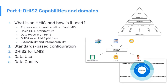In Part One, DHIS2 Capabilities and Domains, we'll start by explaining what a health management information system is and how it's used — its purpose, characteristics, and basic architecture. We'll also look at the data types involved, building on what you may have learned in the Introduction to DHIS2 course. We'll discuss how the DHIS2 software platform can be extended within and beyond the health system, cover standards-based configuration, explore DHIS2 in a logistics and supply chain context, and then explore topics of data use and data quality and how DHIS2 can support those.